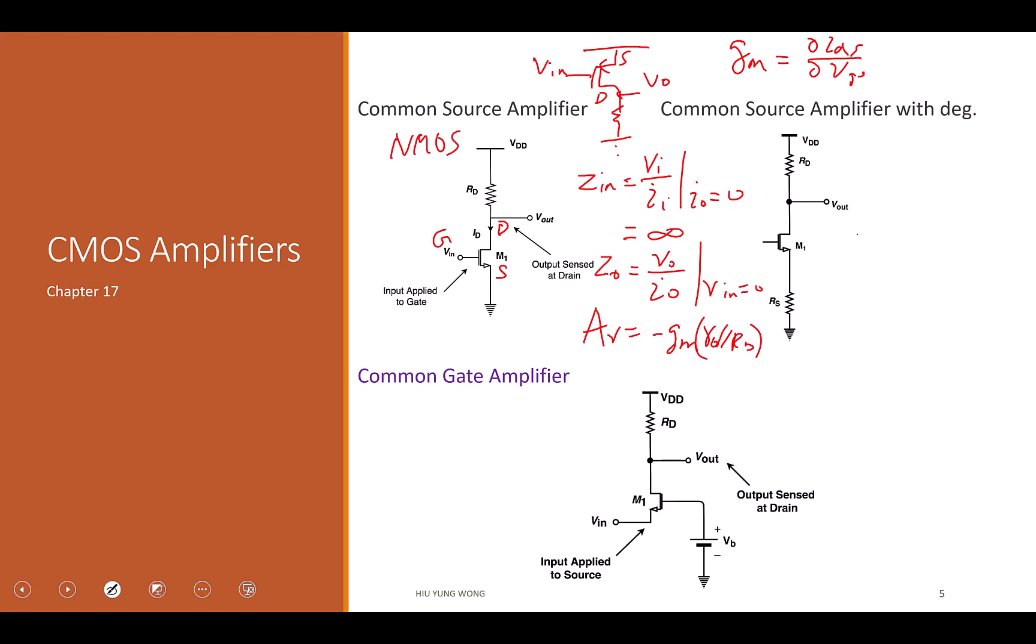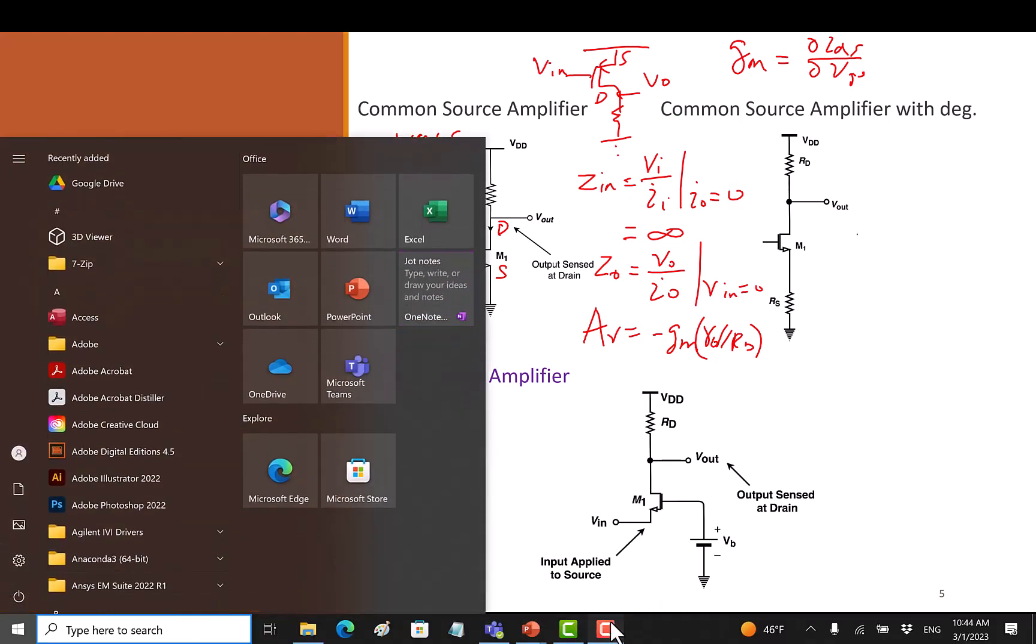Because delta VG divided by ID is ohms. It's not going to be Siemens. It's not conductance. Is that okay? So there are many steps we can make mistakes. But at each step, check yourself, ask yourself, does that make sense? Does the unit make sense? And that is why it's called transconductance. Because it's from the gate to the drain. So it's trans. That is common source amplifier. I hope I'm recording.